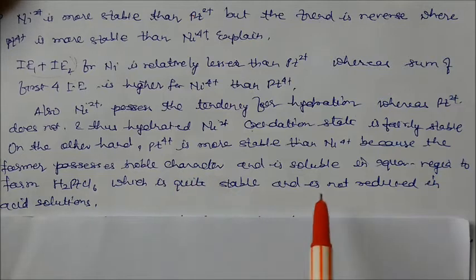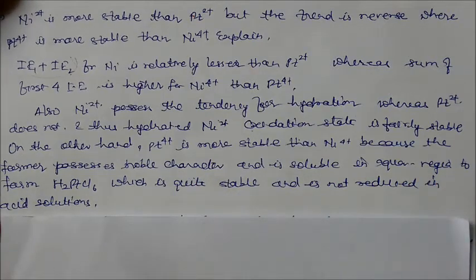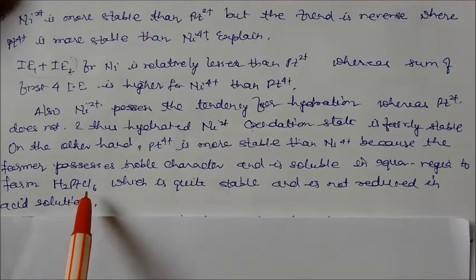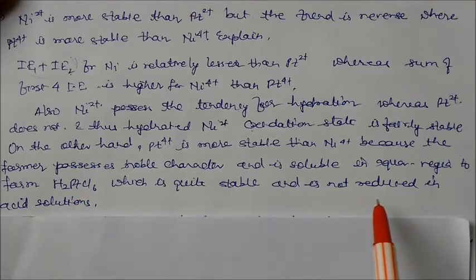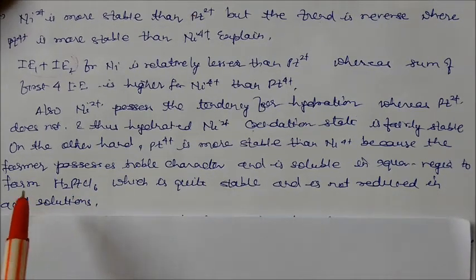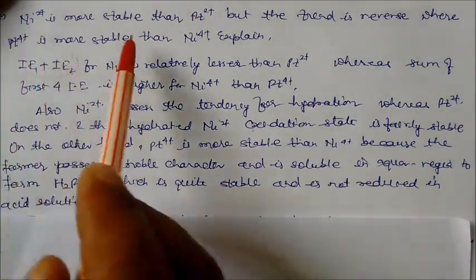On the other hand Pt4+ is more stable than Ni4+ because the former possess normal character and is soluble in aqua regia to form H2PtCl6 which is quite stable and is not reduced to acid solution. That's why Ni2+ is more stable in +2 state and Pt4+ is more stable than Ni4+.